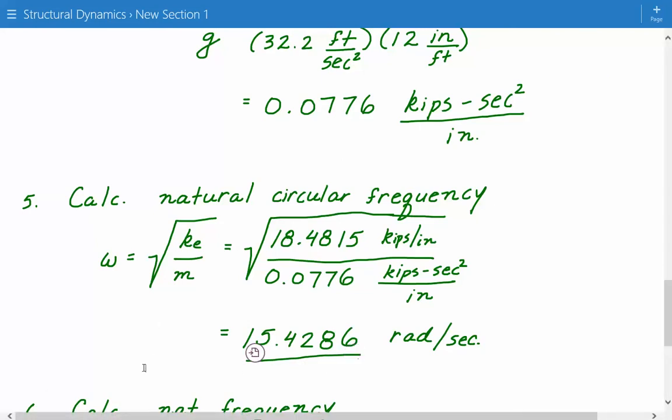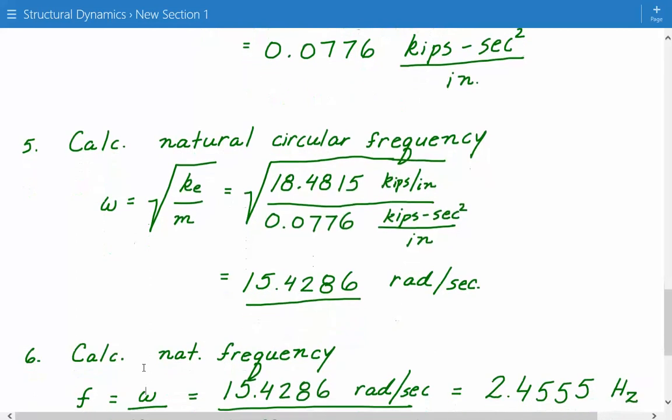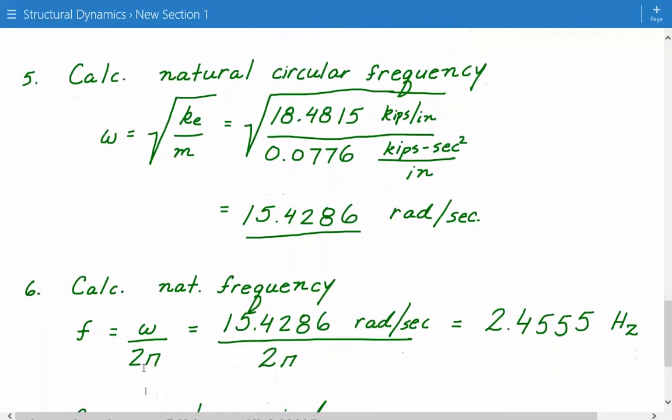Next, we'll calculate the natural frequency, which is equal to omega divided by 2 pi. So omega is 15.4286, which we just calculated above. Divide that by 2 pi. And this gives us a natural frequency of 2.4555 hertz.